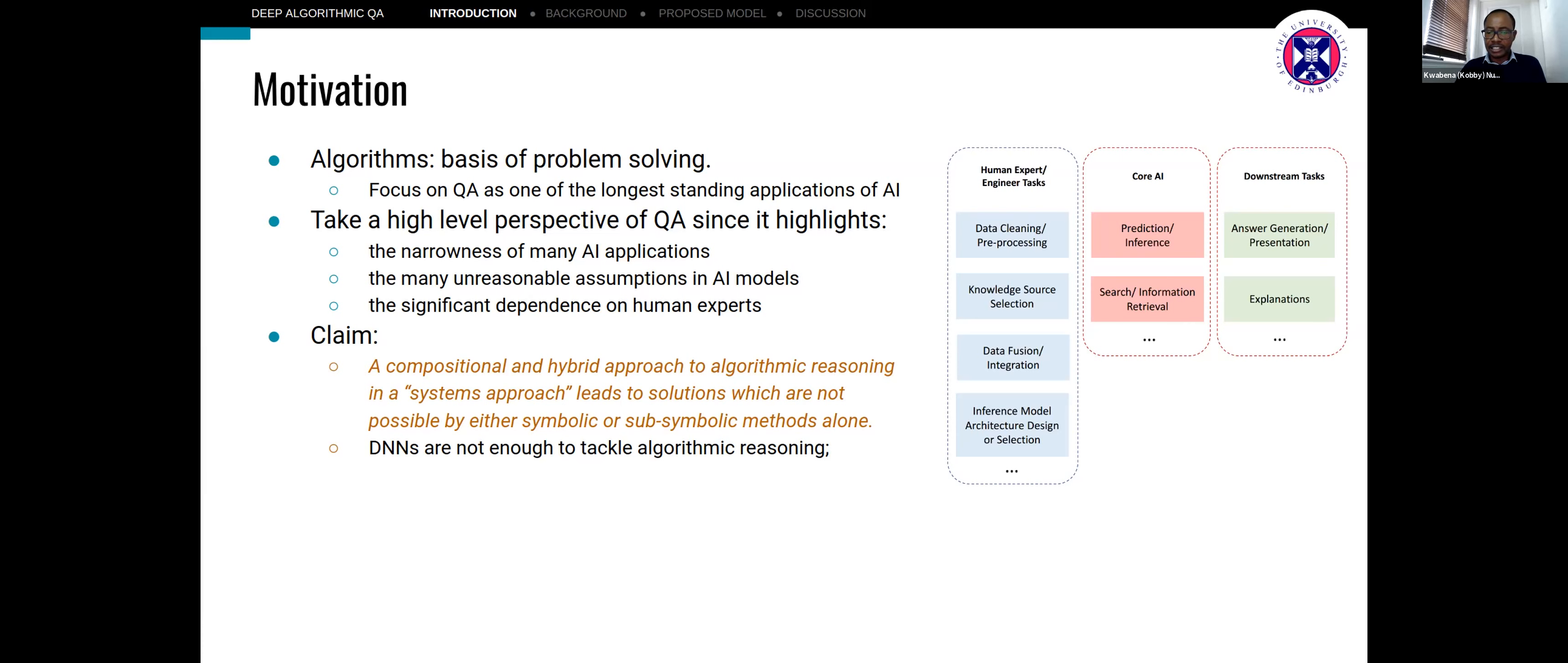As you see in the image here, we do have a lot of the core AI algorithms focusing on prediction and inference problems, but there are several downstream and upstream tasks which are often handled by humans. Our main claim is that composition and a hybrid approach to algorithm reasoning for QA using a systems approach leads to better solutions which are not necessarily possible by either symbolic or subsymbolic methods alone. More importantly, deep neural networks are not enough to tackle algorithmic reasoning.